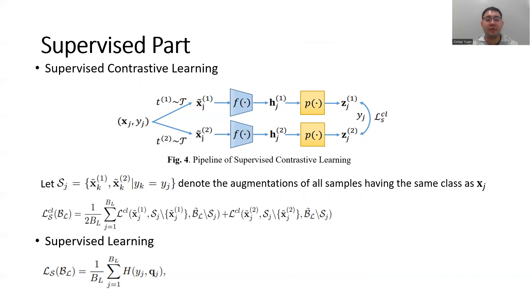Then, for the first augmentation of xj, anything in Sj except itself will be considered as its positive samples, where anything else will be considered as negative samples, which corresponds to the first term in the supervised contrastive learning loss function.